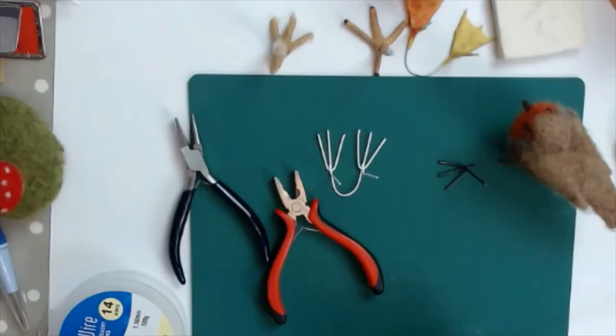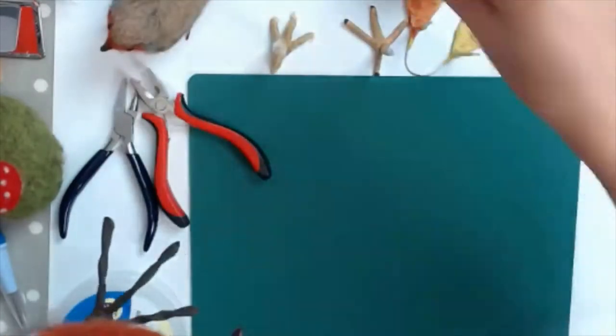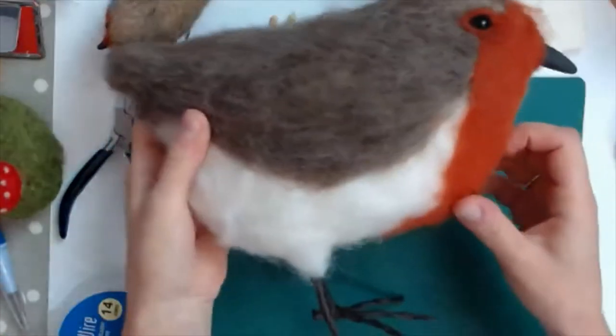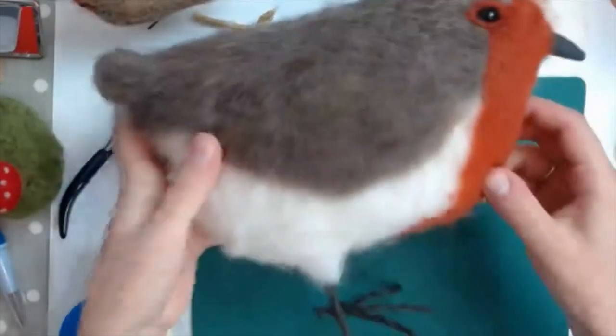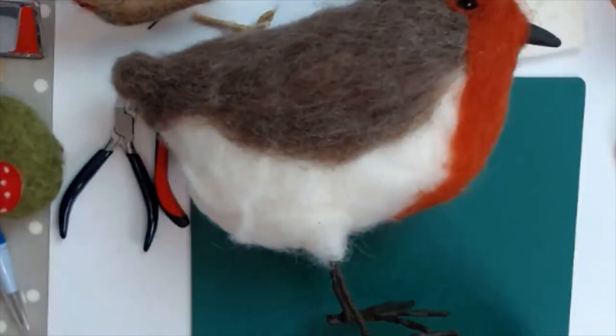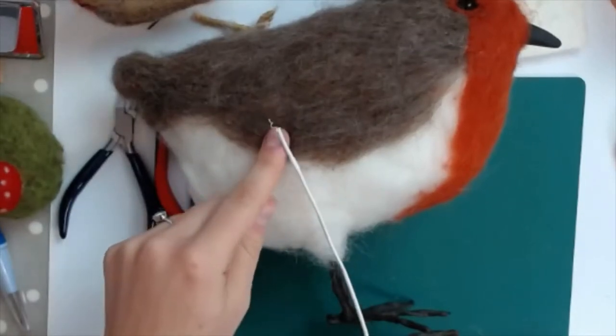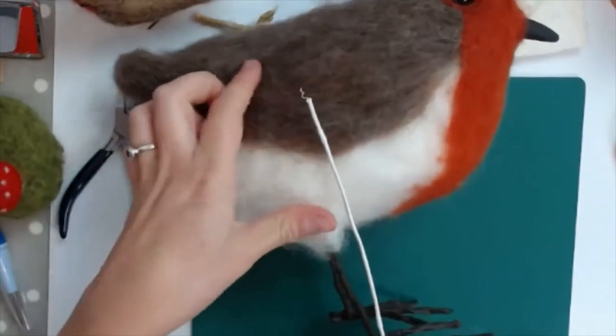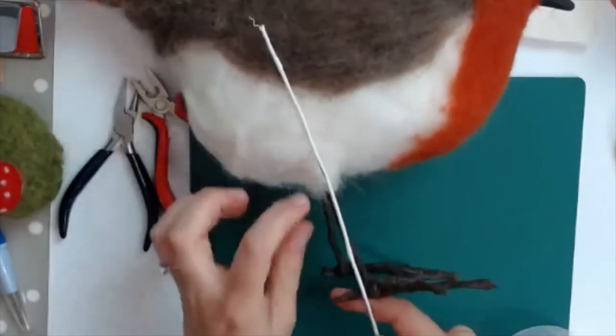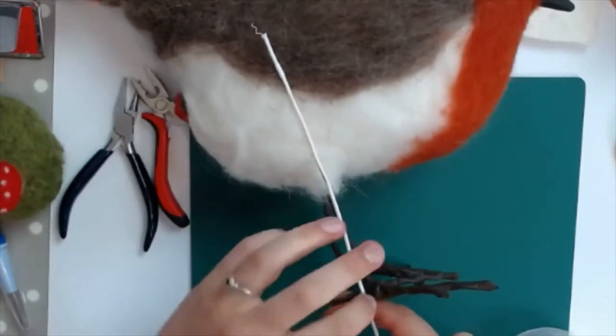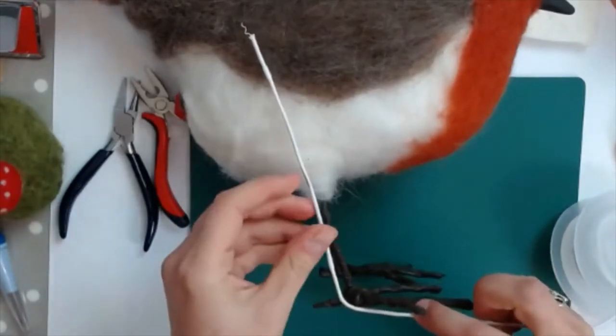So first of all you want to make the bird first ideally, then you know what size you're going for. Basically you want to first of all find the length of the wire. The wire's got to go up inside the body of the bird, I can feel the end of that wire around here, so it's going that far into the body, and then you need to make a bend at the ankle of the bird, so just there. So that's how long my leg's going to be.